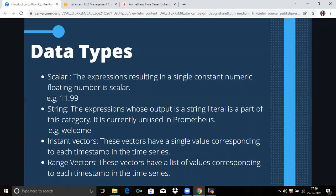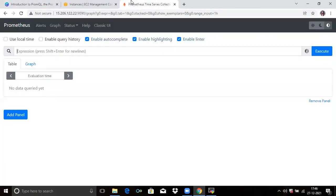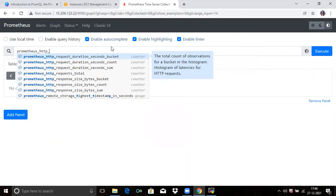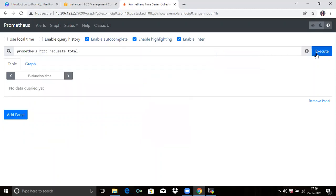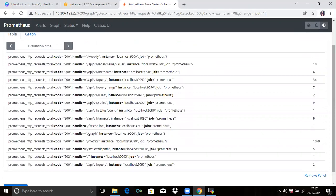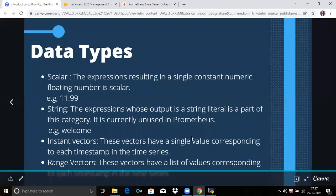First is instant vectors. These vectors have a single value corresponding to each time step in the time series. Now go to the expression browser here and run the query prometheus_http_request_total. Click on execute. If you scroll down, you can see it has returned all the time series with the name prometheus_http_request_total and it has returned one value of the given time series. You can see here for one, then for second 10. That's the instant vector.